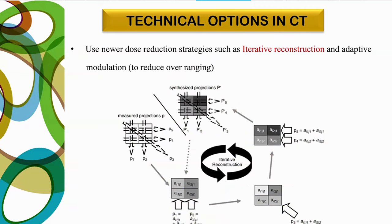Use newer dose reduction strategies such as iterative reconstruction and adaptive modulation techniques. These help reduce dose to the pediatric patient compared to conventional filtered back projection. These are among the key advantages of newer CT imaging techniques.